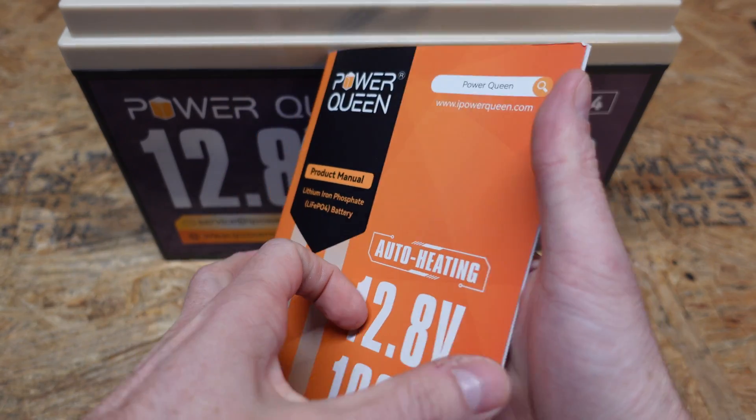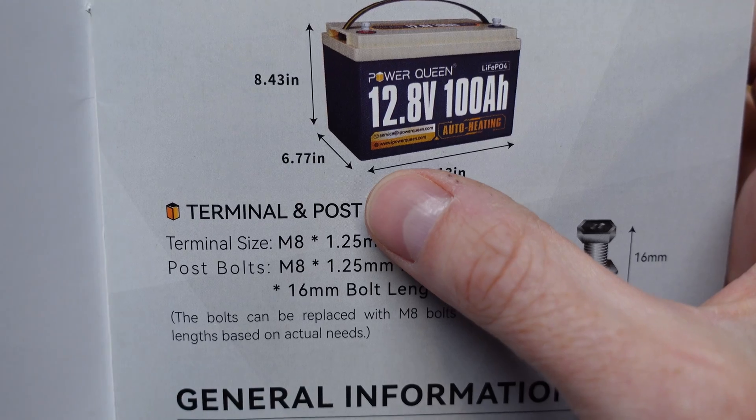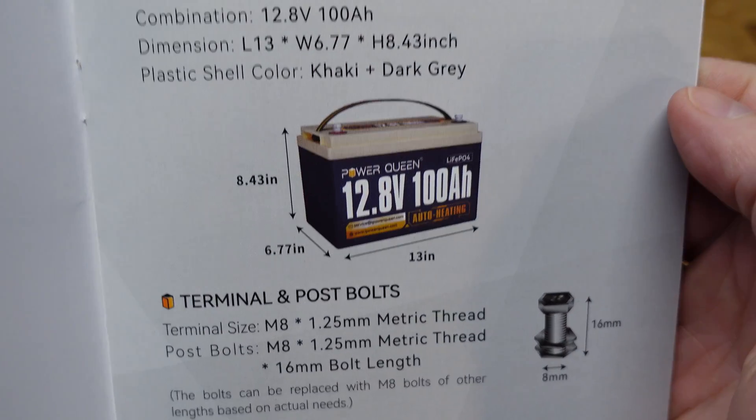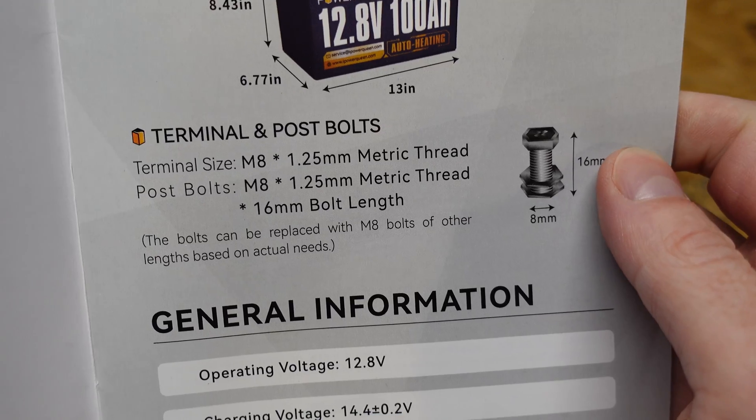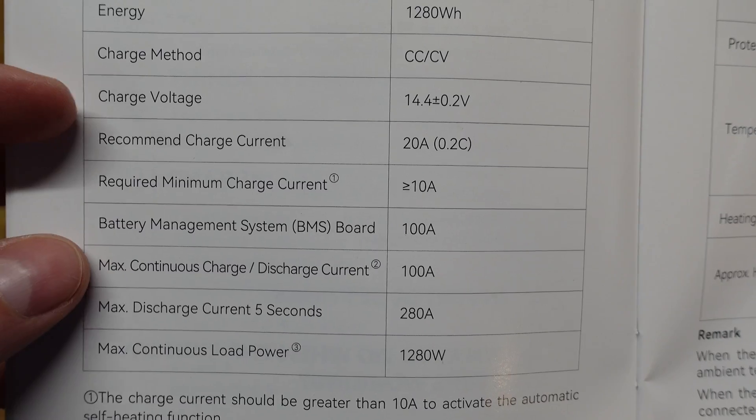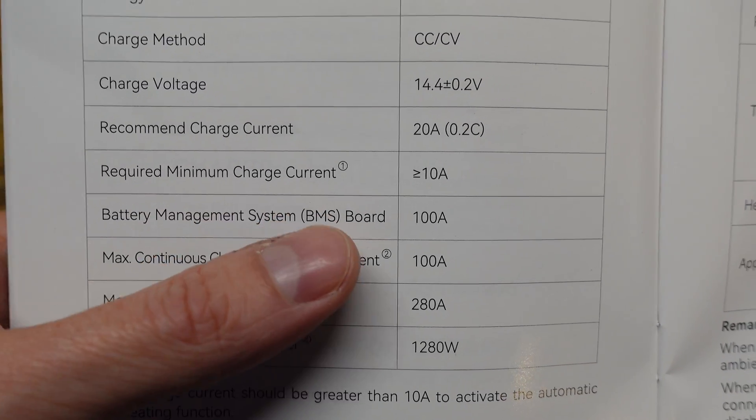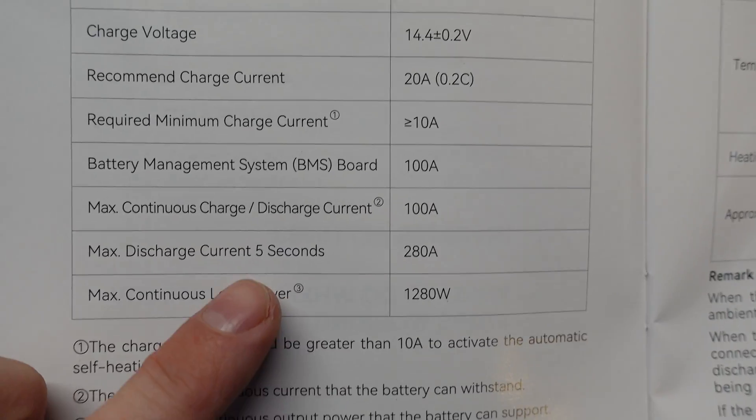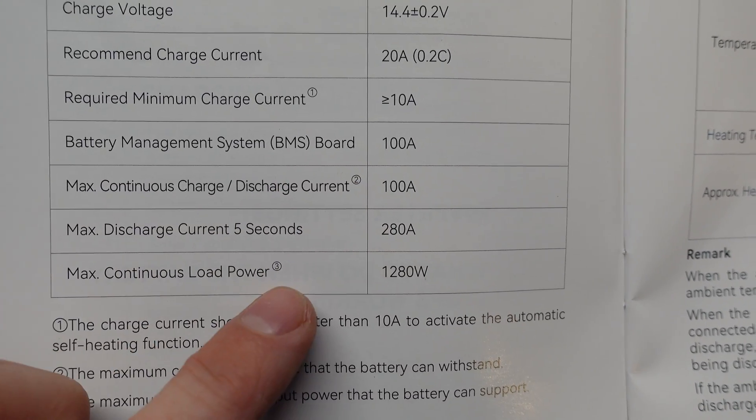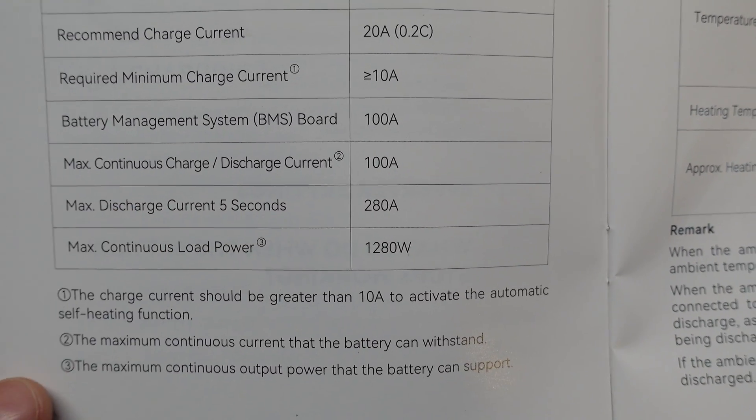So taking a look at the user's manual here, overall dimensions it's 13 inches wide, 6.7 inches deep and 8.43 inches in height and the post bolts are M8 sized. On to the specifications page 100 amp hours. Recommended charge current is 20 amps. Minimum charge current, once again there's a minimum charge current of 10 amps. Maximum continuous charge and discharge 100 amps and the max pulse discharge is 280 amps for up to five seconds.